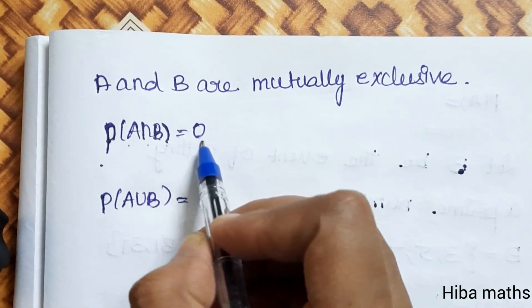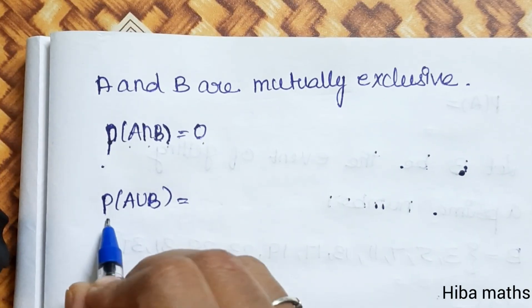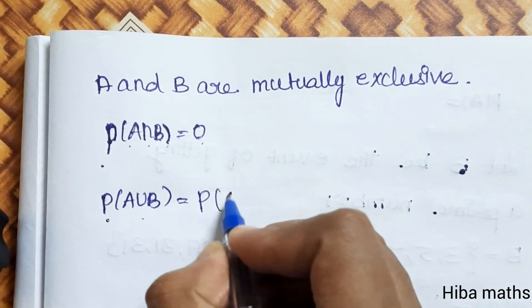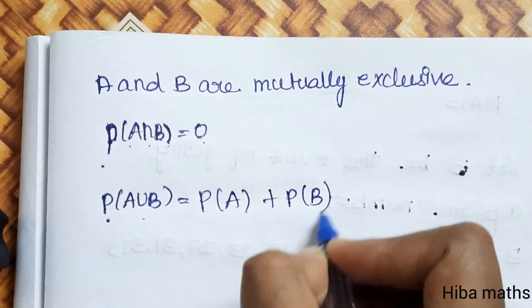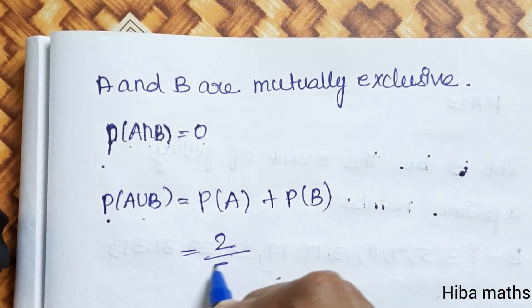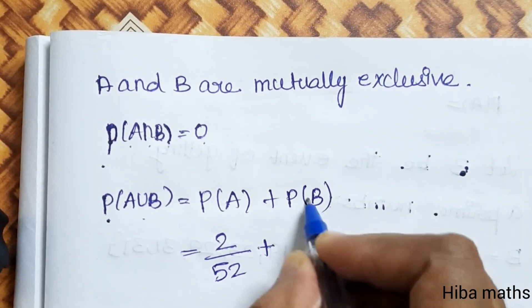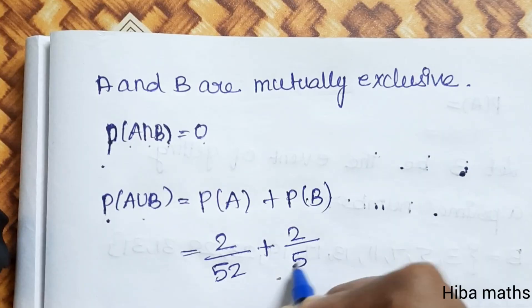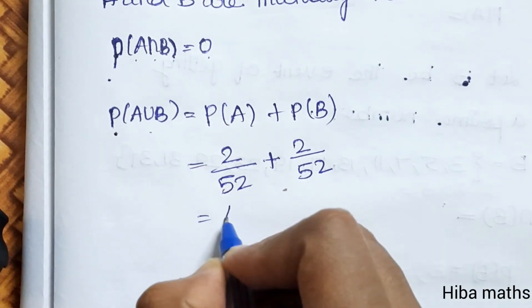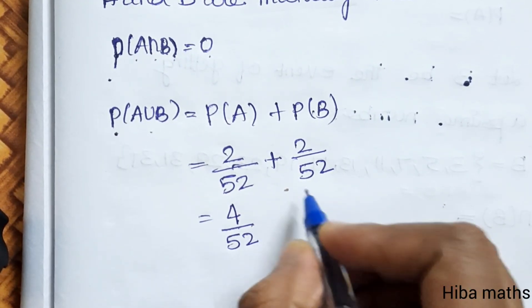So probability of A intersection B is 0. Now probability of A union B formula: P(A) plus P(B) is equal to 2 by 52 plus 2 by 52. Then answer 2 plus 2 is 4 by 52.